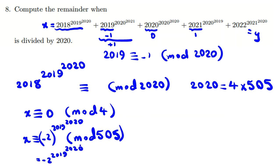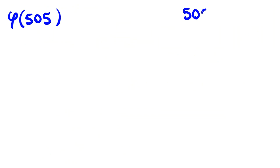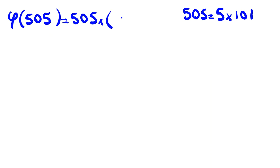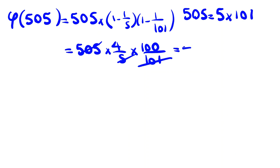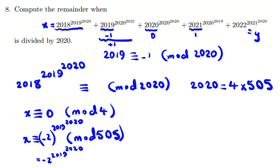We want to find 2 to the power of what mod 505. We use the totient function: φ(505) = φ(5 × 101) = 505 × (1 - 1/5) × (1 - 1/101) = 505 × (4/5) × (100/101) = 400. Since 2 and 505 are coprime, by Euler's theorem 2^400 ≡ 1 mod 505.